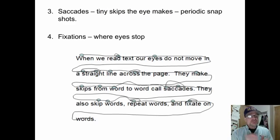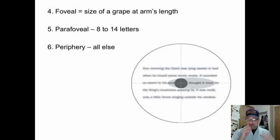It's called saccades, the tiny skips that the eye makes, and it has these periodic snapshots. Fixation is where the eyes stop. When we read, our eyes do not move in straight lines. We stop and skip. As a matter of fact, our eyes only stop on about 60 percent of the words. That means we skip 40 percent. We don't read every word. We think we do because our brain is filling in the blanks.